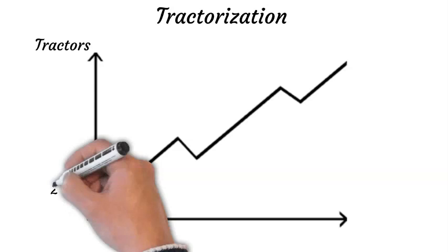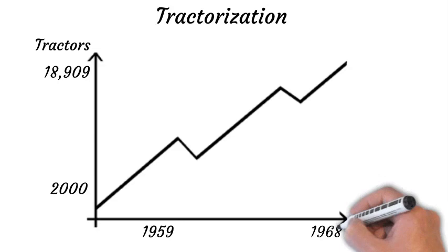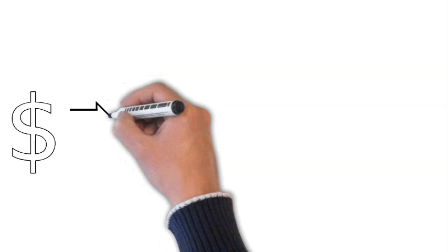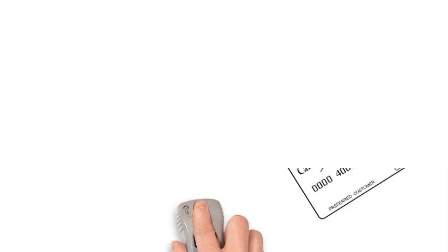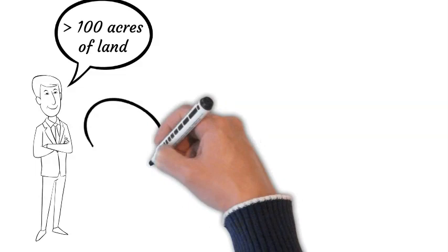Moving on to tractorization: there were around 2,000 tractors in Pakistan in 1959, which increased to 18,909 in 1968. An overvalued exchange rate made tractors available at prices considerably below world market prices, and the Agricultural Development Bank of Pakistan was also lending cheap credit, causing the agricultural sector to boom.